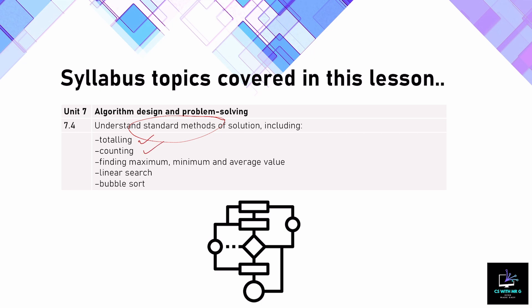We're going to look at the standard methods of counting, finding the maximum, minimum, and average value. In the next lesson we will look at two more standard algorithms, as these are quite complex and will need more time. So today we are just going to focus on methods one, two, and three, using our previous knowledge of assigning variables, conditional statements, and iteration.